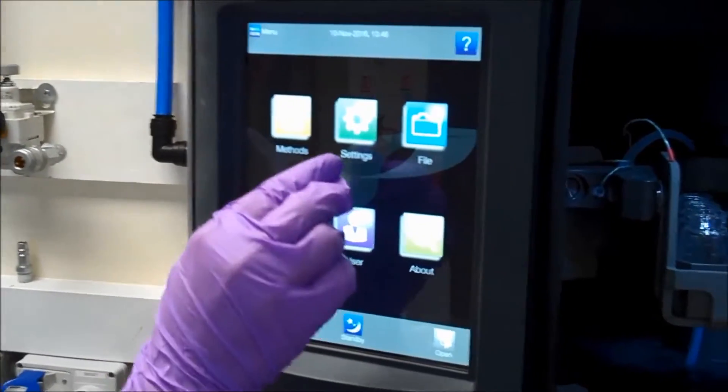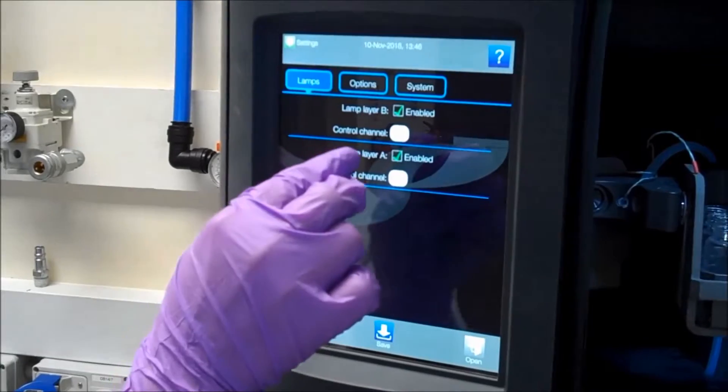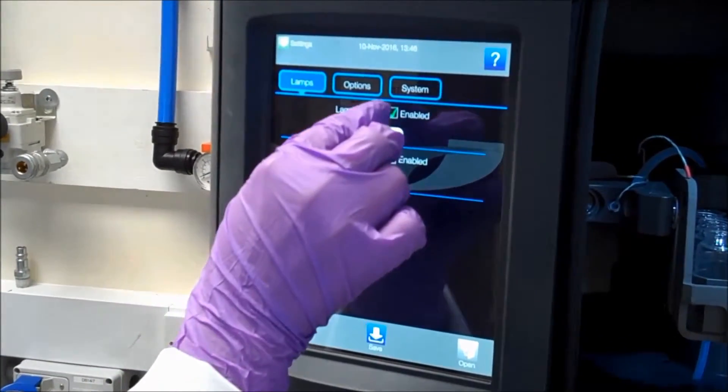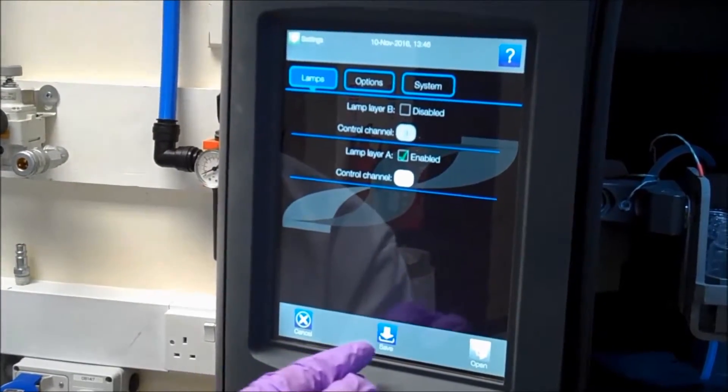Go to settings and make sure lamp layer B is disabled and save.